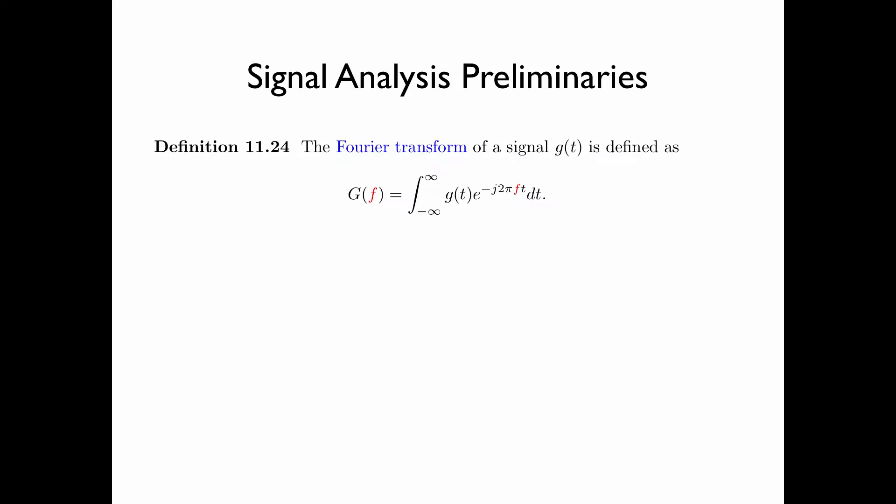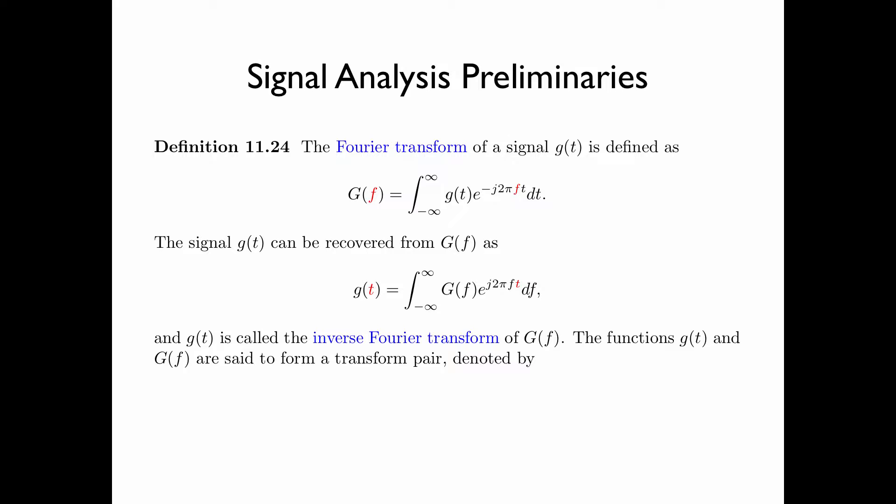In this section, we need some preliminaries from signal analysis. The Fourier transform of a signal g of t is defined as g of f equal to the integral of g of t times e to the power minus j 2 pi f t dt, where t is from minus infinity to infinity. If the Fourier transform of a signal exists, then the signal can be recovered from the Fourier transform as g of t equals the integral of g of f times e to the power j times 2 pi f t df. The functions g of t and g of f are said to form a transform pair, and by convention, the variables t and f are referred to as time and frequency respectively.